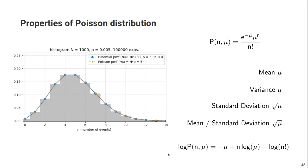Taking the logarithm of the Poisson distribution — which will become useful when discussing maximum likelihood reconstruction — gives simply minus mu plus n times log(mu) minus log(n factorial).